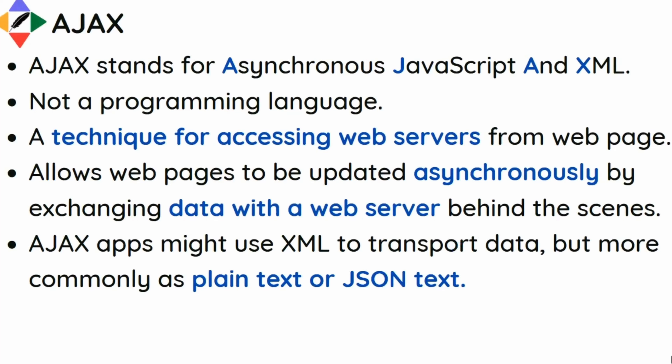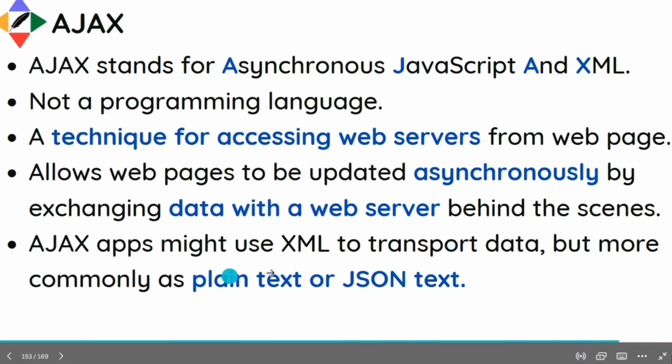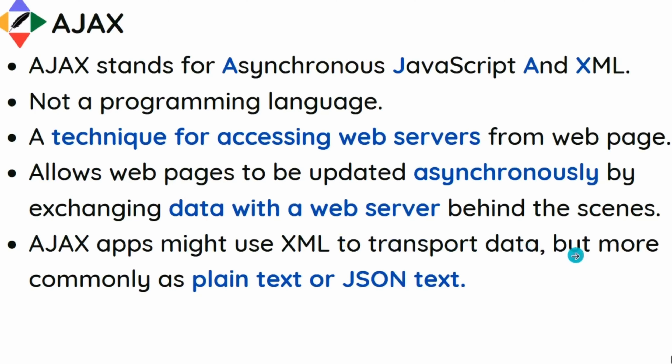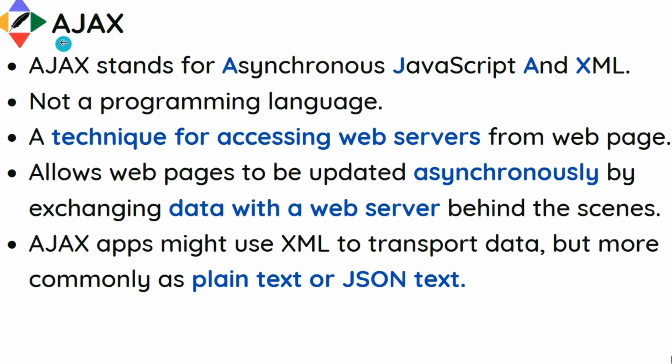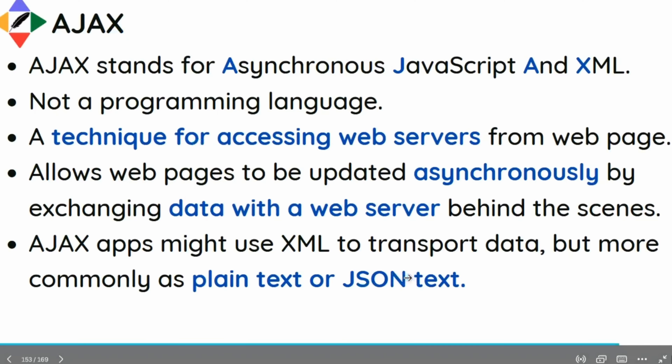AJAX allows web pages to update asynchronously by exchanging data with the server behind the scenes. You can run multiple tasks in the background without interfering with your front end, so your system won't wait indefinitely for a response from the server. AJAX apps might use XML to transport data, but more commonly JSON or plain text is used.